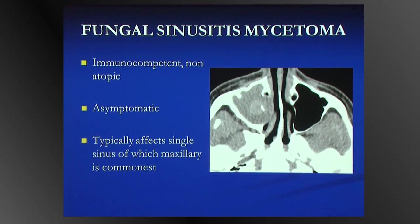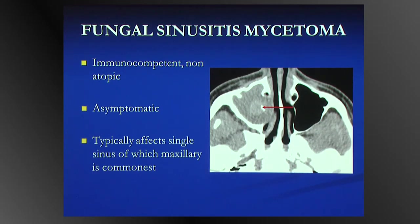The fungal ball typically affects a single sinus, of which the maxillary sinus is most common. The imaging features are pathognomonic: a low-density mass, mildly expansile, filling the sinus, in the centre of which is high-density material and/or calcification — that high-density being calcium phosphate or sulphate, or heavy metals absorbed onto the fungal hyphae. Typically they have sclerotic walls, with dense sclerosis of the posterior lateral antral wall indicating chronicity.